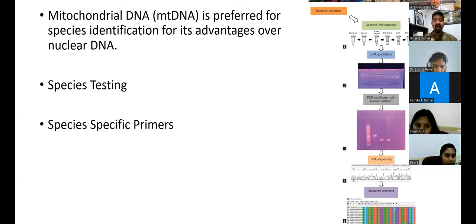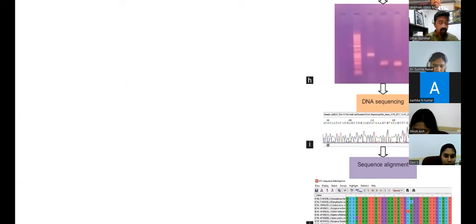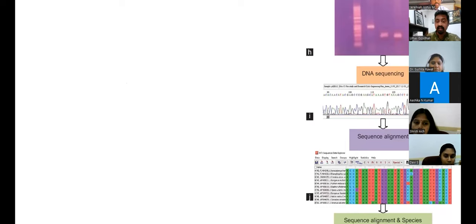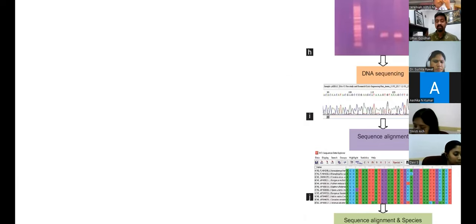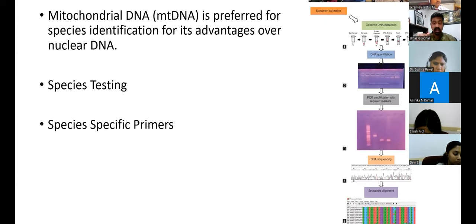PCR amplification is when you amplify DNA with species-specific primers, amplifying only those regions of importance — not the entire DNA, which would be cumbersome and impractical for routine analysis. Then we go for DNA sequencing, where we identify the sequence of the amplified regions and align them with sequence alignment software. The final result involves comparing sequences with online repositories such as BLAST, which is an online repository of nucleotide sequences, to identify which species the sample belongs to. This is the DNA species identification process.